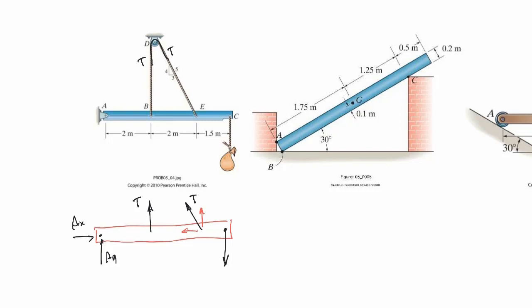This last one is a frictionless rod leaning against two walls. Because this support is frictionless here, there's going to be a B_Y. Because this one is frictionless over here, there's going to be an A_X, but no A_Y or B_X since those are frictionless supports. At point C, there is contact perpendicular to the contact surface, giving two components: C_Y and C_X. If this angle is 30 degrees, then C_X equals C cos30 and C_Y equals C sin30.